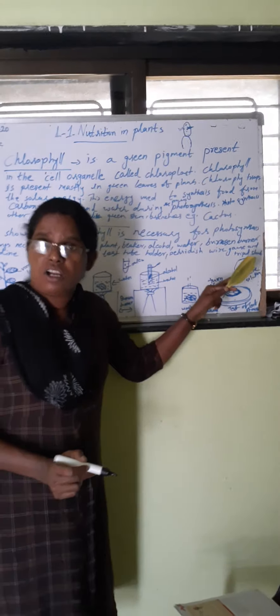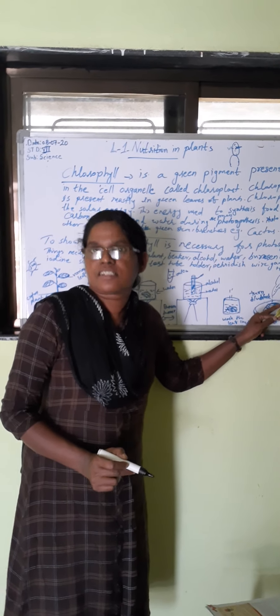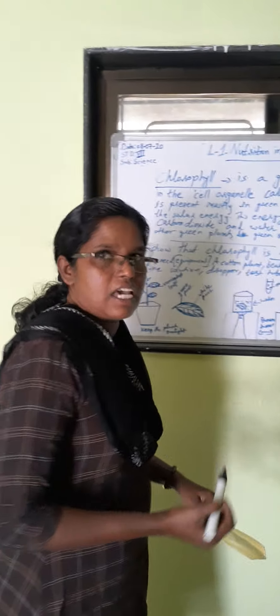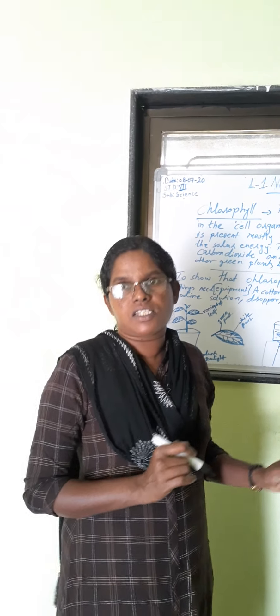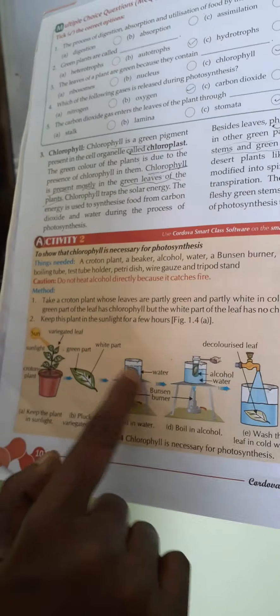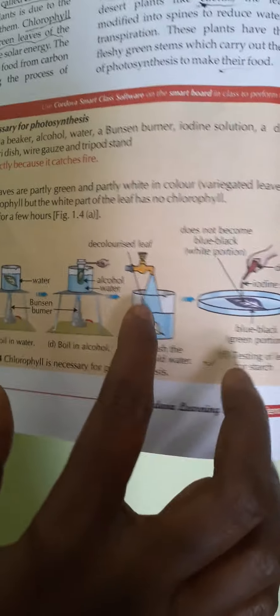After five minutes, observe what happens to the leaves in the petri dish. The side where the complete green part was turns blue-black color. Why? Because starch is present inside the green part. Starch is a complex carbohydrate — extra glucose is changed to complex carbohydrate, and that is called starch.